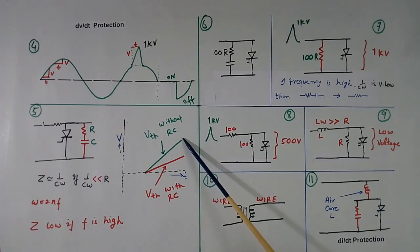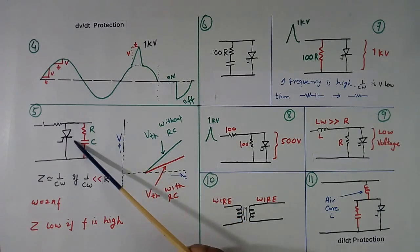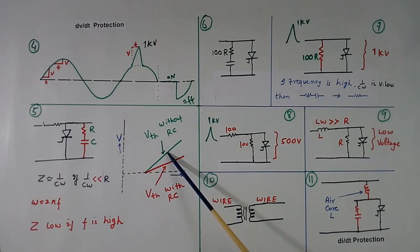Here I have shown the input. The green color is this. When we connect RC, because this impedance becomes low, this green will become like this. This is voltage across thyristor with RC. This is voltage across thyristor without RC. So this attenuation is taking place.